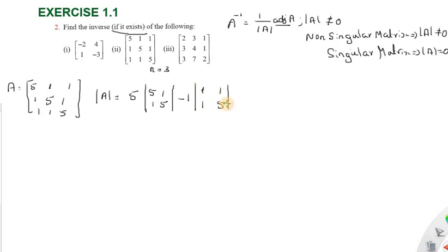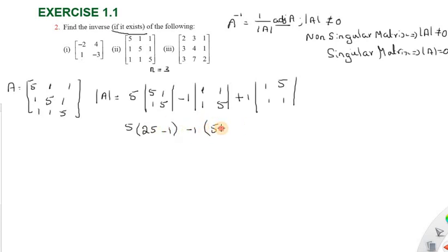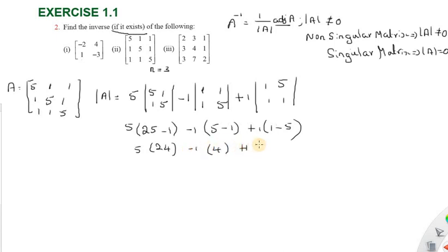For the second matrix A with 5s and 1s, we expand along the first row. The determinant is: 5 into 25 minus 1, minus 1 into 5 minus 1, plus 1 into 1 minus 5, giving 5 into 24, minus 1 into 4, plus 1 into minus 4, which equals 120 minus 4 minus 4 equal to 112.